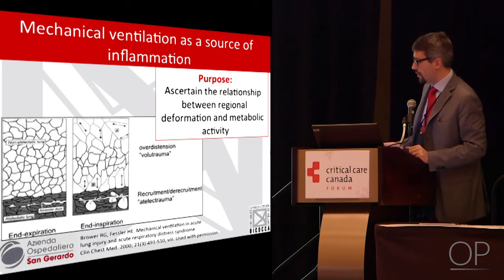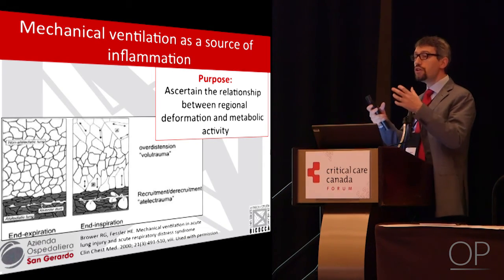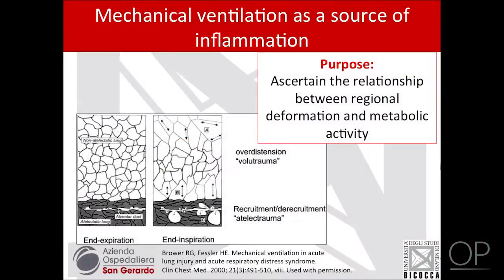The second part of our study was to assess what could be the relationship between regional deformation induced by tidal ventilation and metabolic activity — or inflammation, if you will. For the purpose of our study, we identified two main mechanisms of ventilator-induced lung injury: one being cyclic opening and closing of alveoli, so-called atelectrauma, and the other being overdistension of lung tissue which is already ventilated. I know this is a bit schematic, but it was quite a useful distinction for our framework.